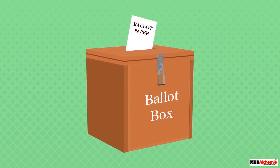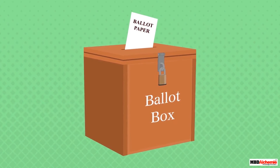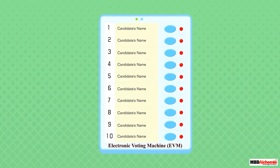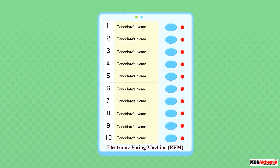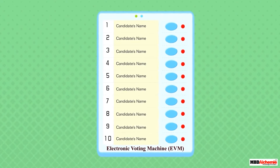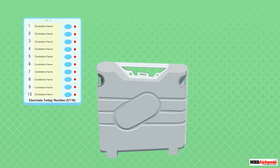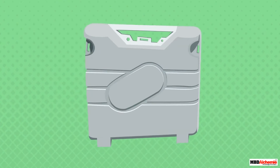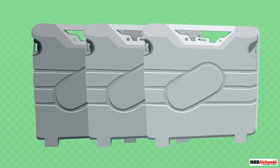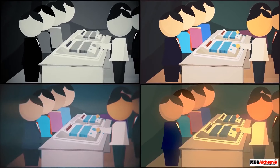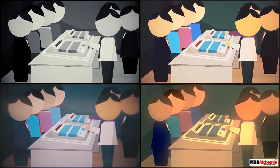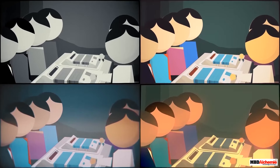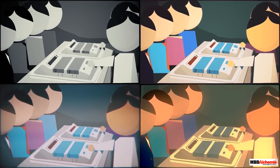The election day is the day when voters cast their vote. Earlier ballot papers were used for this purpose, but now they have been replaced by Electronic Voting Machines, or EVMs. Once the polling is over, all electronic voting machines are sealed and taken to a secure place, then opened and the votes secured by each candidate are counted.